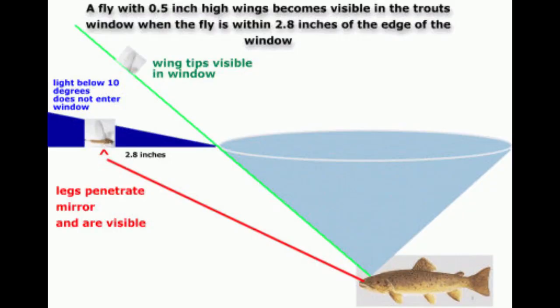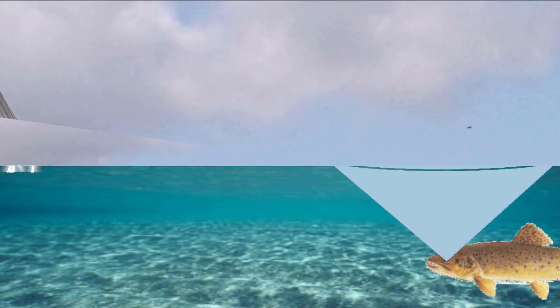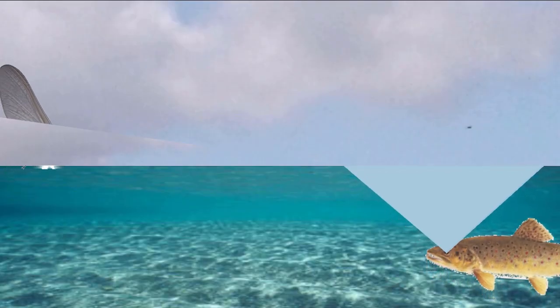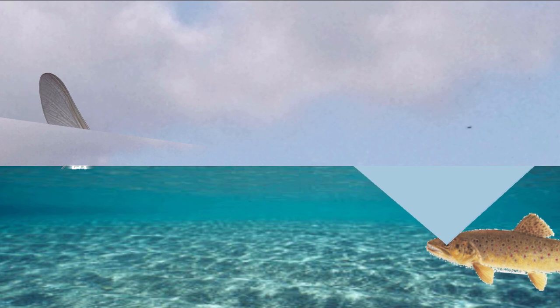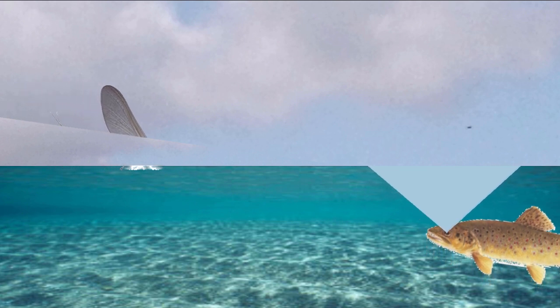Why does the trout keep the fly at the edge of the window? I think trout behave in this way in order to judge the exact position of the fly. By keeping the fly in a precise position relative to their body, the trout stands a very good chance of engulfing the insect.